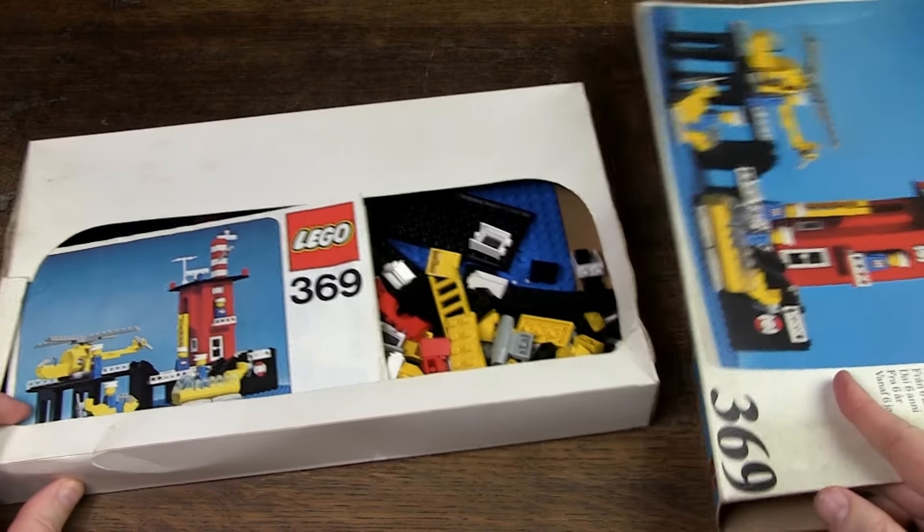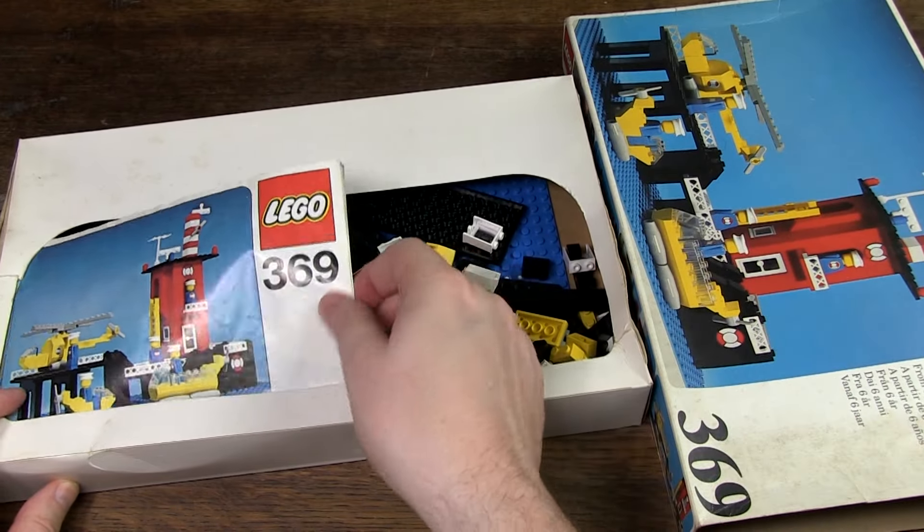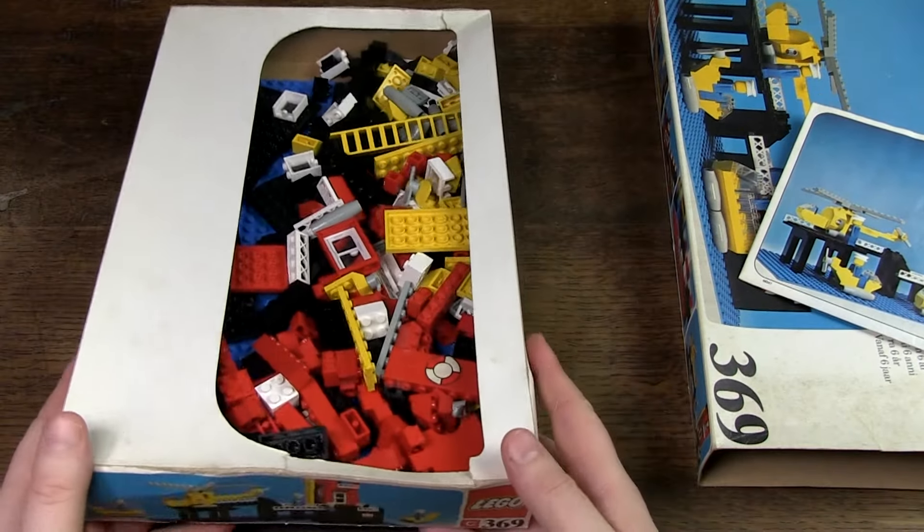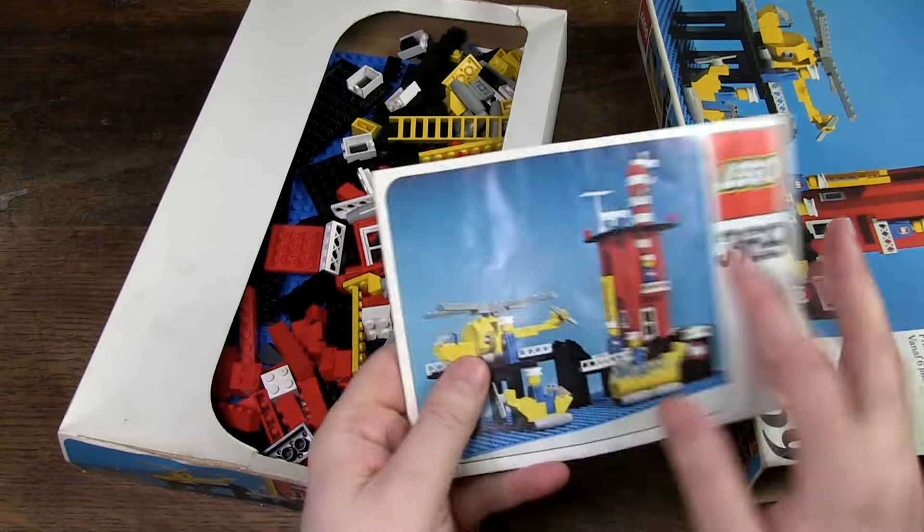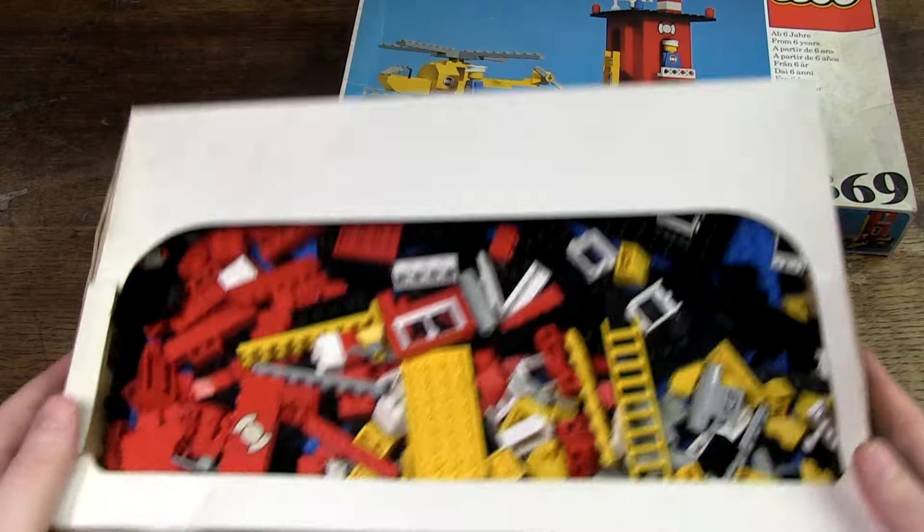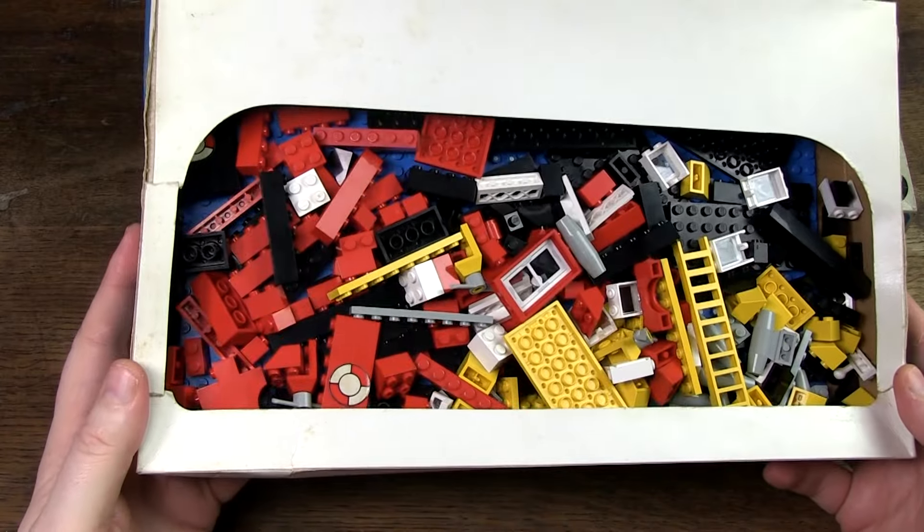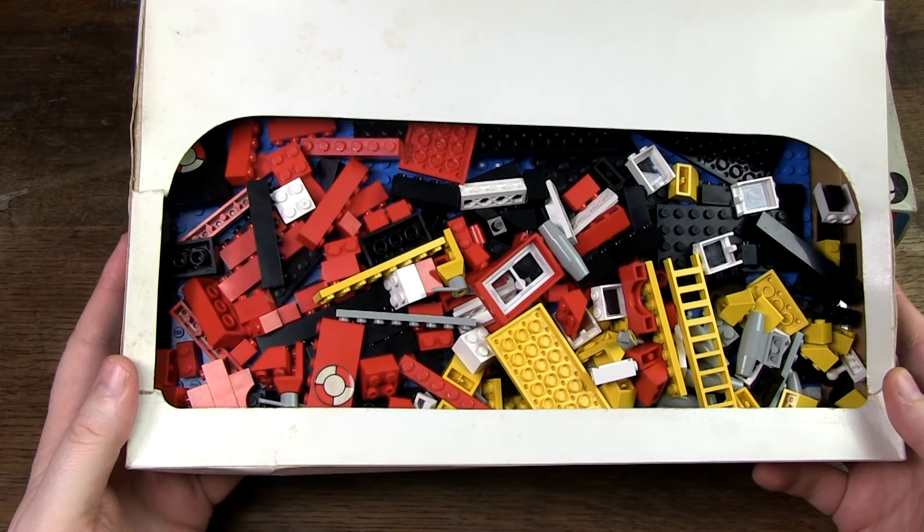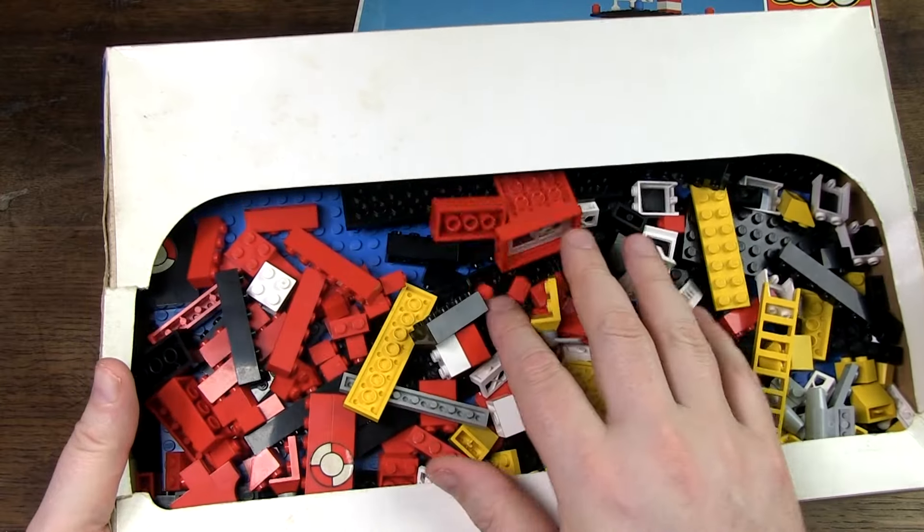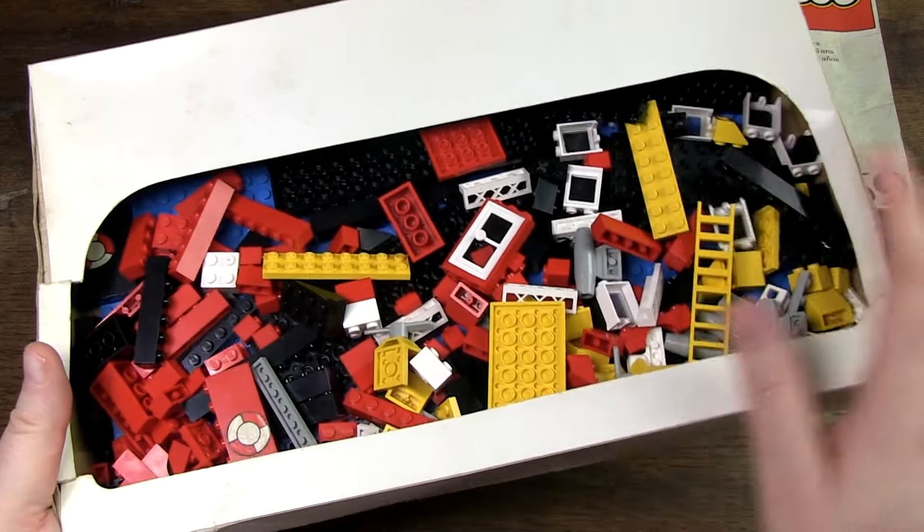The set consists of 275 parts and 5 minifigures. I have the set complete with all the parts, the box and the manual. The box is quite large and I am pleasantly surprised by the many parts. I mainly see a lot of color and many bricks in different sizes which I think is positive.